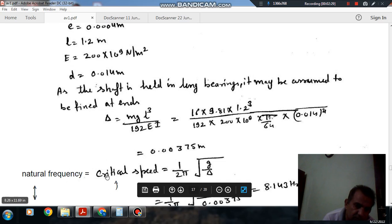When the natural frequency becomes equal to the speed of the shaft, that speed is called critical speed. So natural frequency actually means critical speed of the shaft.